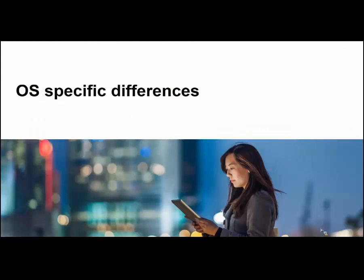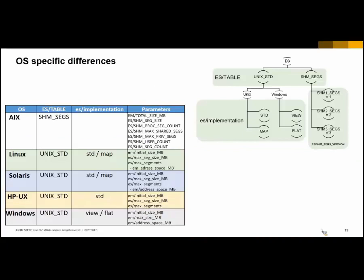There are some differences to take into account depending on the operating system. The first parameter to consider is ES_TABLE. It can be set to UNIX_STD or SHMSEX. This parameter defines which memory implementation will be used. If wrongly set, the system may not behave as expected. AAX platform works with segments, so only for this platform the parameter should be set to SHMSEX. The second relevant parameter is ES_IMPLEMENTATION, which defines the implementation of memory management on UNIX-based operating systems. Values STD or MAP are both allowed. On 64-bit Linux systems, the recommendation is STD. Value MAP works for Linux and Solaris, but not on HP-UX.